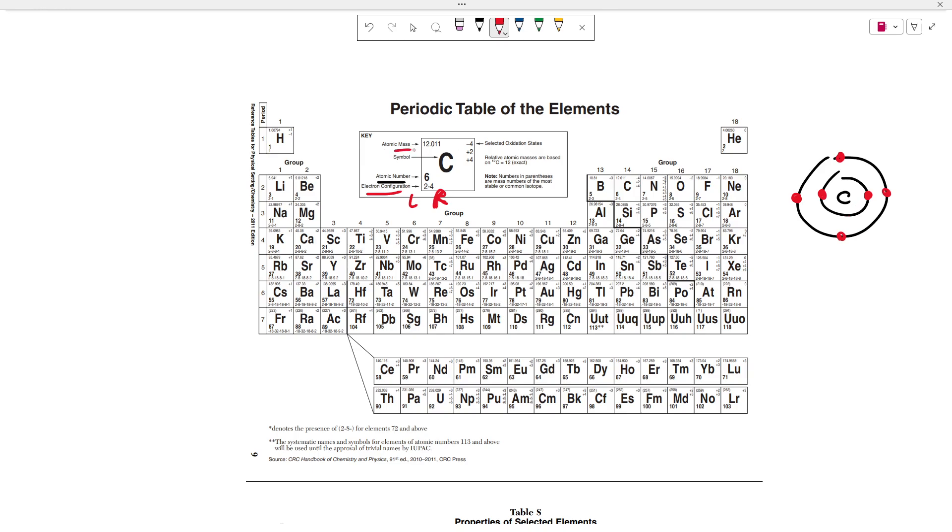Moving on, this number right here is the atomic mass. It's going to tell you how heavy the element is. Specifically, how many grams are in one mole of that element.